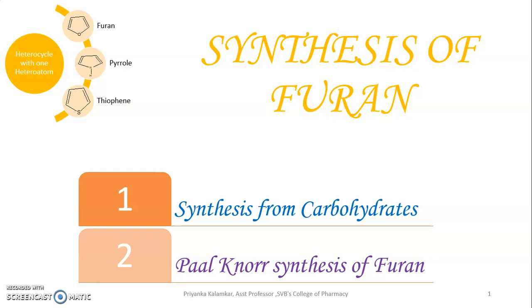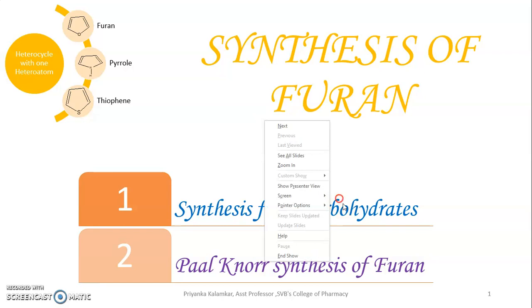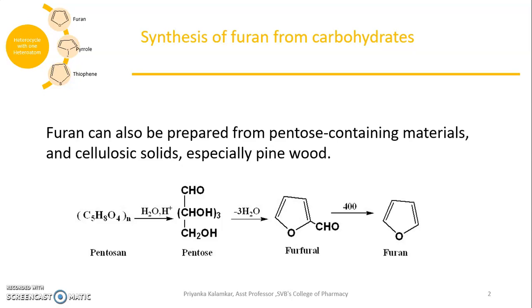In synthesis from carbohydrates, furan can also be prepared from pentose-containing materials and cellulosic solids, especially pine wood. In the general reaction, pentose dehydrates and gives you a furfural molecule with loss of three water molecules. Furfural on decarboxylation gives you furan.